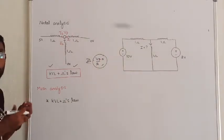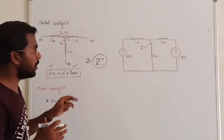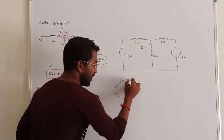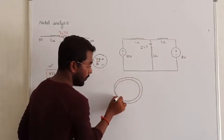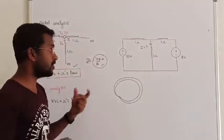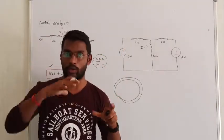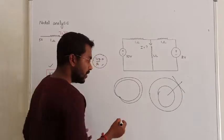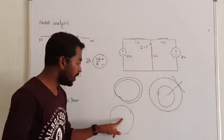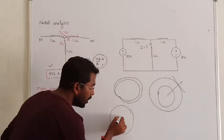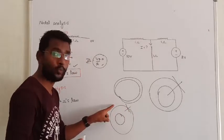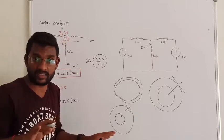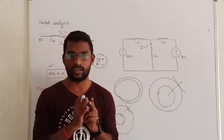We need to make a mesh. A mesh is a loop — it is a closed circuit with a starting point and ending point. A loop is different from a mesh. A mesh has no other loop inside it. If you have a loop with another loop inside, that outer one is a loop but not a mesh. The mesh is separate; that is the difference.